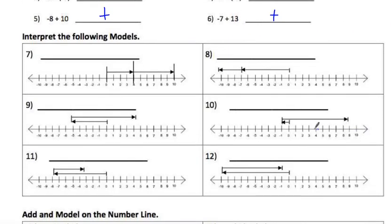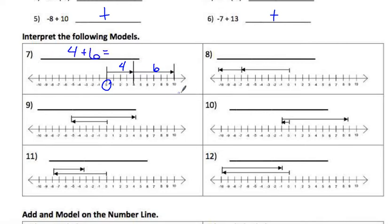Another way to show integer addition and subtraction is on a number line, which may make more sense for those having trouble with the signs. We always start at zero and then move. For example, we go zero and then move four spaces, then another six spaces, so this is 4 plus 6 equals 10. You just count how long each arrow is.